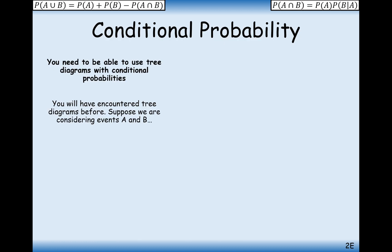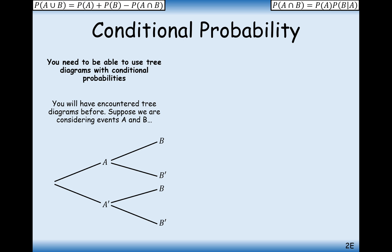We've all seen tree diagrams before — they're pretty familiar to us — but how can we use this concept of conditional probability on tree diagrams? You've probably not seen a tree diagram written like this before, but this is effectively how a tree diagram is drawn technically and mathematically. First of all, we've got the first event, that's event A, and if you've only got two outcomes for event A, it's the probability that A does happen and the probability that A does not happen — A dash. Then you've got event B that happens after that; these are two independent events, A and B.